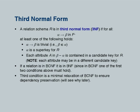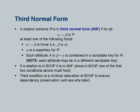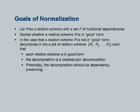The definition of third normal form (3NF) is very much like BCNF except for one additional condition. For every dependency α→β in F+, either it is trivial, or α is a super key, or — the new condition — every attribute A in β minus α is contained in a candidate key for R. The third condition is the minimal relaxation of BCNF needed to ensure dependency preservation. The goals are: each schema in a good form, lossless join decomposition, and preferably dependency-preserving decomposition.